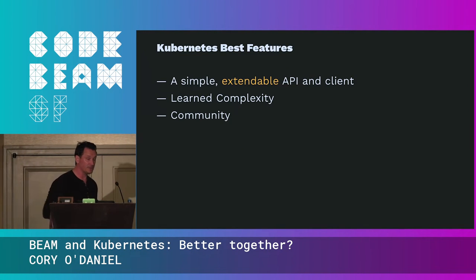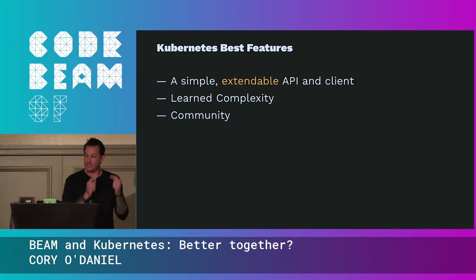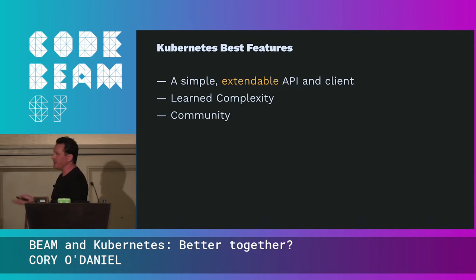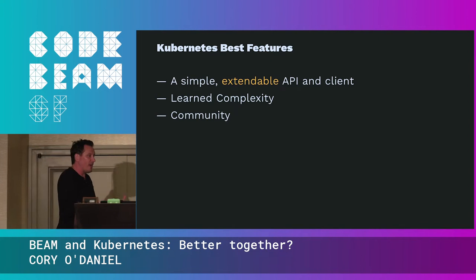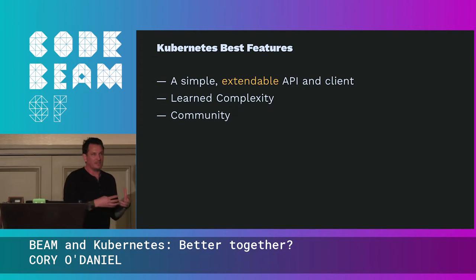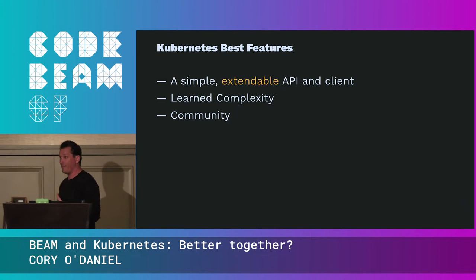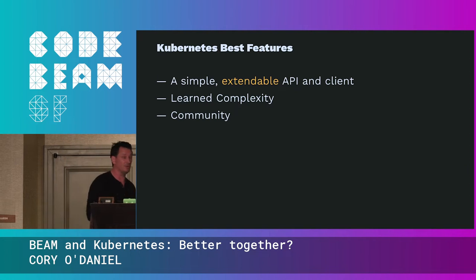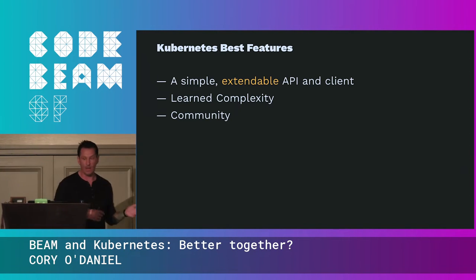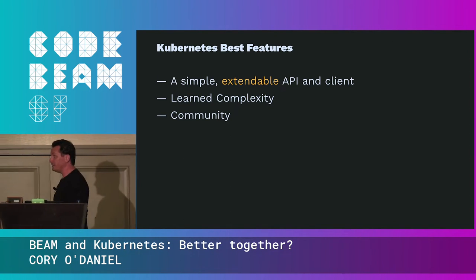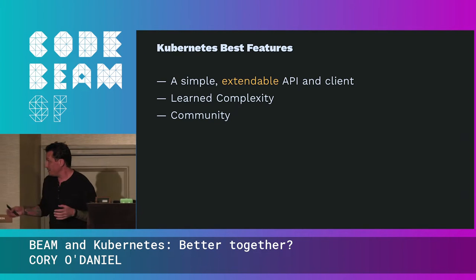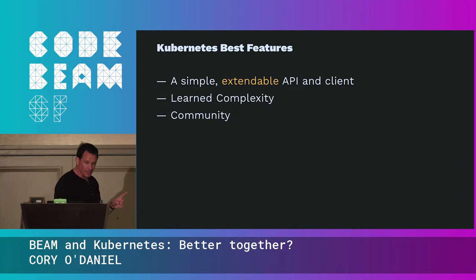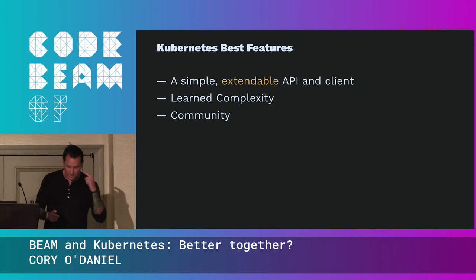The interesting thing about these features is that not a single cloud provider offers them in the same way. Sure, they expose the Kubernetes API to you, but you don't have a single consistent interface for dealing with everything in GCP or AWS. Learned complexity is certainly learned complexity — it's a lot of different tools and a lot of different services.